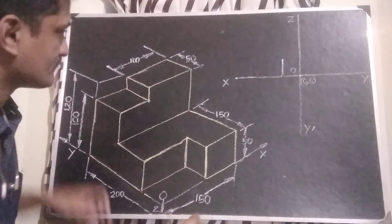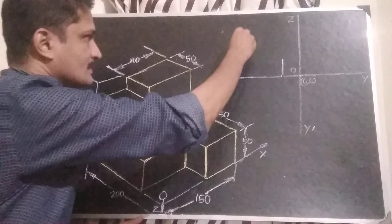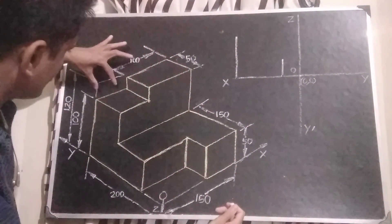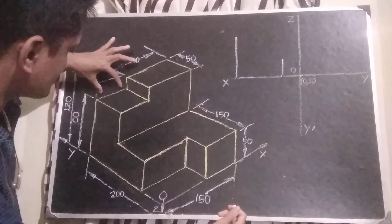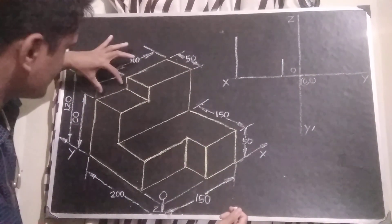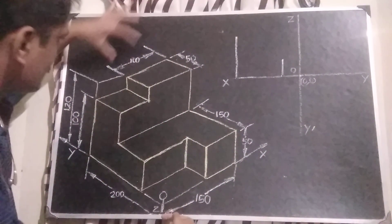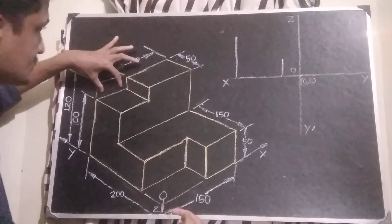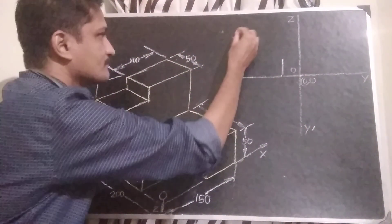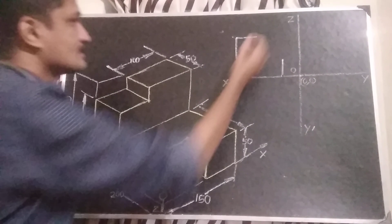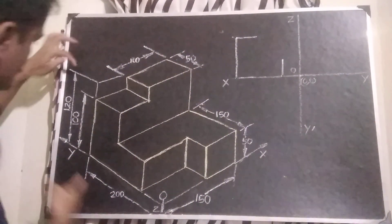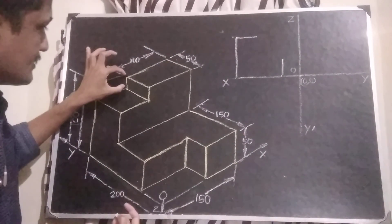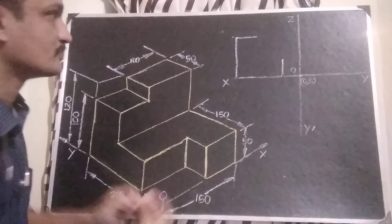This height is equal to 100mm. From the front view we can see this portion — this total distance is equal to 150, and this distance is equal to 100, that means this distance is equal to 50. That height is equal to 120, and this remaining distance is equal to 20.